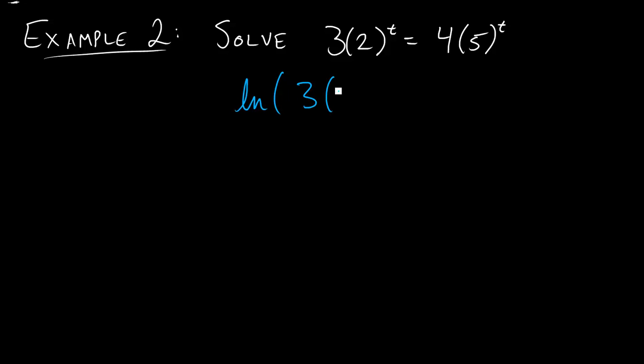So we have the ln of 3 times 2^t equals the ln of 4 times 5^t. And so now notice what we have here is we're going to apply that second rule I wrote above. Here we have a term that we're going to call A and we're going to call this whole term B. If we do the same thing here, we notice that we have a product of A times B, and we can break up that ln.